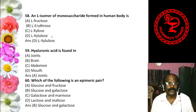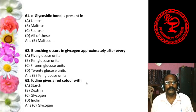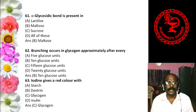Question 16: Which osazone crystals are irregular clusters of fine needles called the 'powder puff'? Options: A. Glucosazone, B. Galactosazone, C. Lactosazone, D. Maltosazone. Osazone crystals can be needle-shaped or fan-shaped structures. The answer is C, lactosazone — they form irregular clusters called the powder puff.